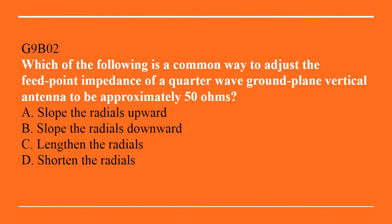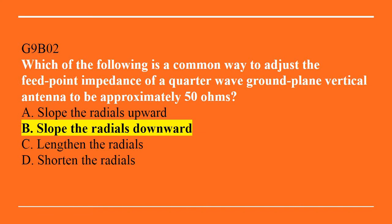G9B02: Which of the following is a common way to adjust the feed point impedance of a quarter-wave ground plane vertical antenna to be approximately 50 ohms? A. Slope the radials upward. B. Slope the radials downward. C. Lengthen the radials. Or D. Shorten the radials. The answer is B, slope the radials downward.